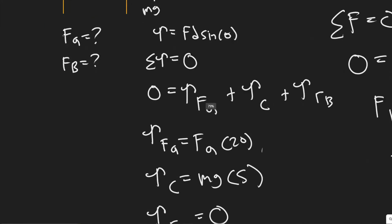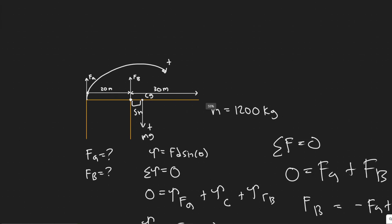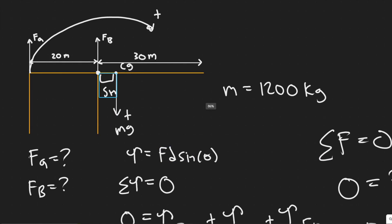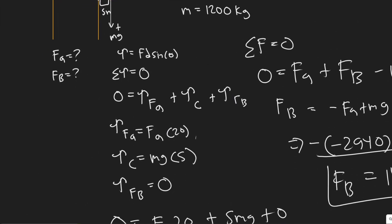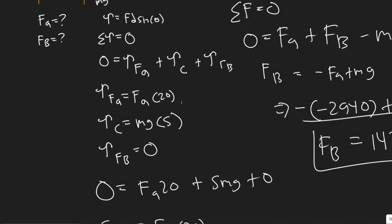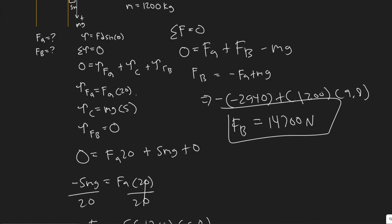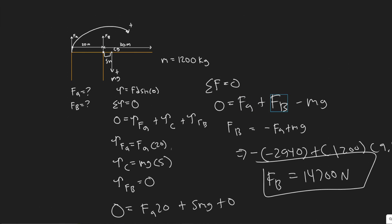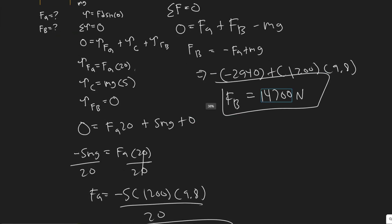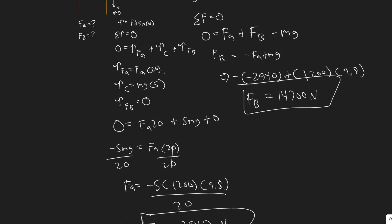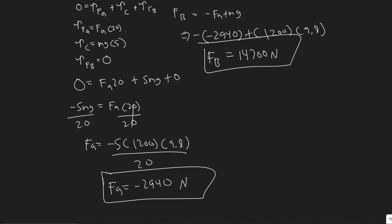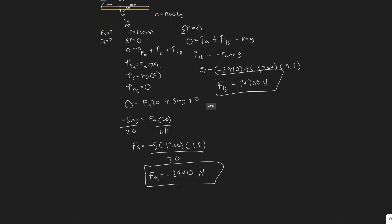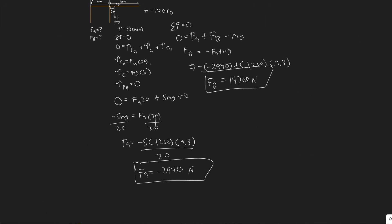To summarize: since the structure is not moving, both the sum of the torques and the sum of the forces equal zero. By choosing to rotate about the point where FB is applied, its torque vanishes, allowing us to solve for FA first. Then summing forces in Y gives FB. Final answers: FA is negative 2940 Newtons (pointing downward), and FB is 14,700 Newtons.